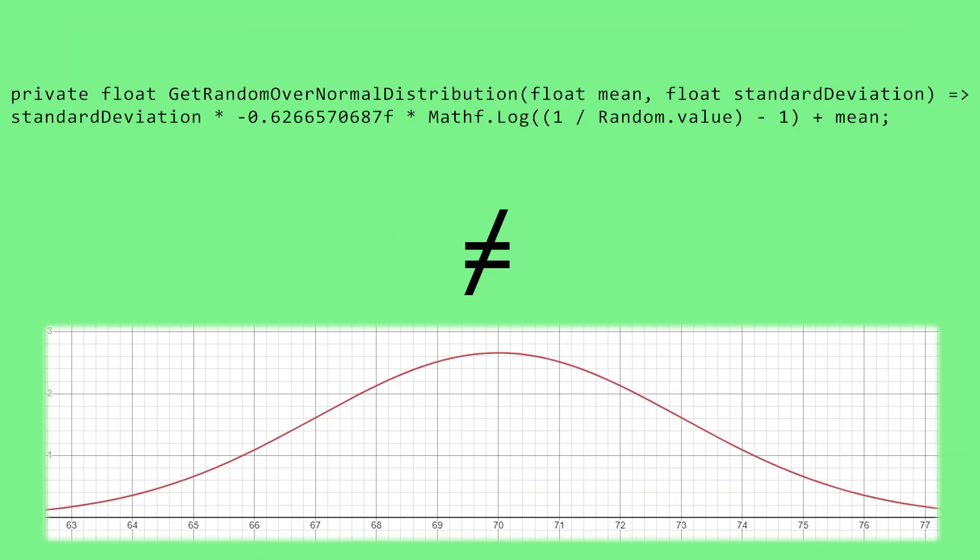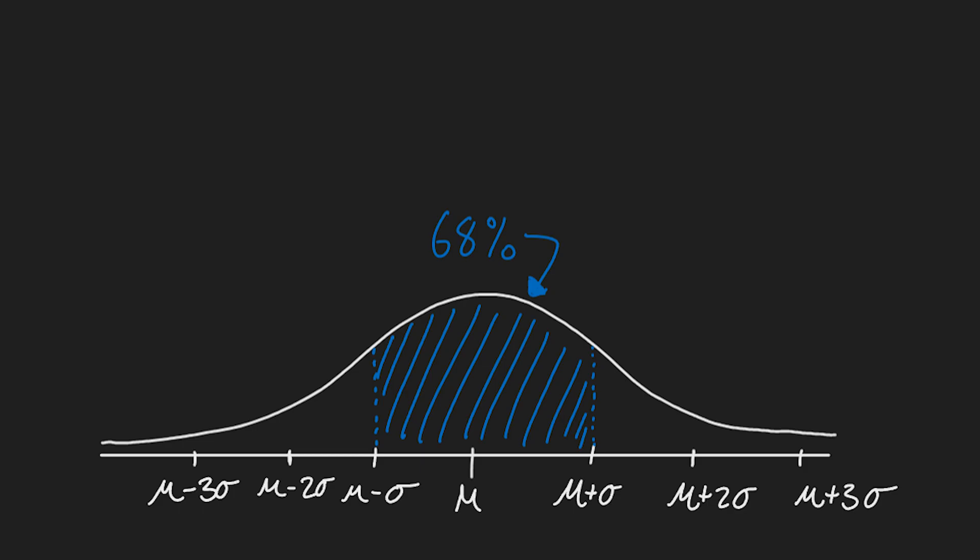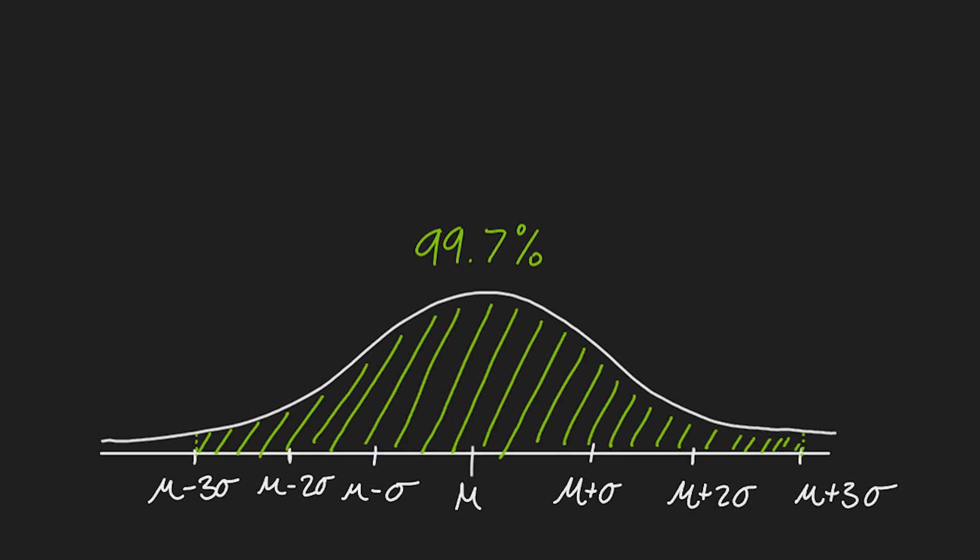So, I'm going to start off section 3 with a little confession. About the code I provided you, it's a lie. It's not a normal distribution. It's a pretty darn close approximation, but it isn't quite a normal distribution.